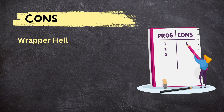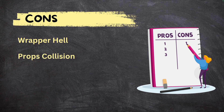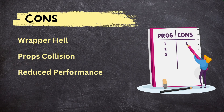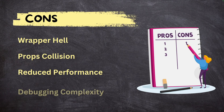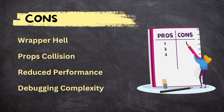Now let's look at the cons. First is wrapper hell — using multiple HOCs on a single component can lead to wrapper hell, making it hard to follow the flow and understand which HOCs are applied and in what order. Next is prop collision — HOCs need to pass down all necessary props to wrapped components; if not handled correctly, there could be prop name collisions or missing props. Third is reduced performance — each HOC creates a new component in the React tree, and if overused or poorly implemented it can increase render time. Finally, debugging complexity — HOCs can make debugging more challenging because you need to trace through multiple layers of wrapped components to identify issues.